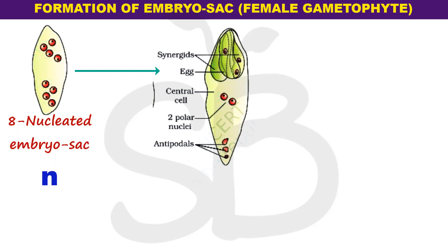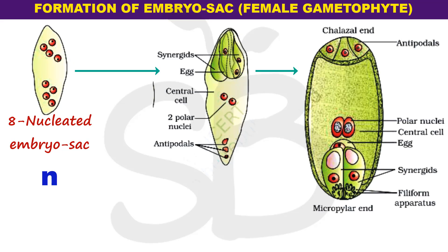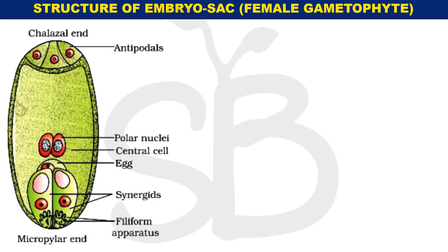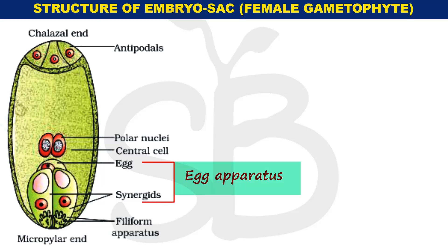This cell wall formation produces a typical embryo sac structure — the female gametophyte. The 8 nuclei are separated into groups. The resulting structure at the micropylar end is called the egg apparatus. The egg apparatus has two synergids and one egg cell. The synergids have finger-like projections.